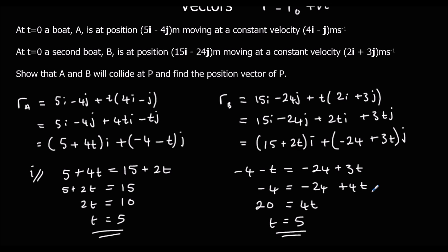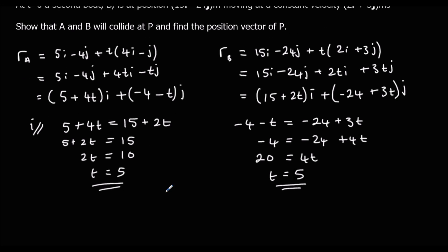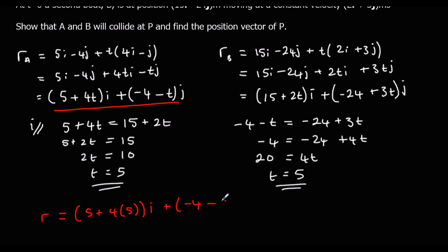What is the position when t = 5? The position is: i-component = 5 + 4×5 = 25i, and j-component = −4 − 5 = −9j. So the collision position is 25i minus 9j.